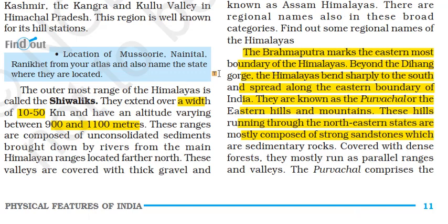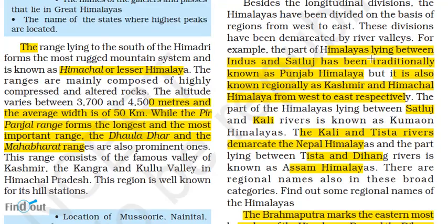The southernmost range is termed as the Shivaliks, with a width of 10–50 kilometers and a very low altitude of 900 to 1,100 meters. These ranges are composed of unconsolidated sediments, and the valleys between ranges are covered with thick gravel.